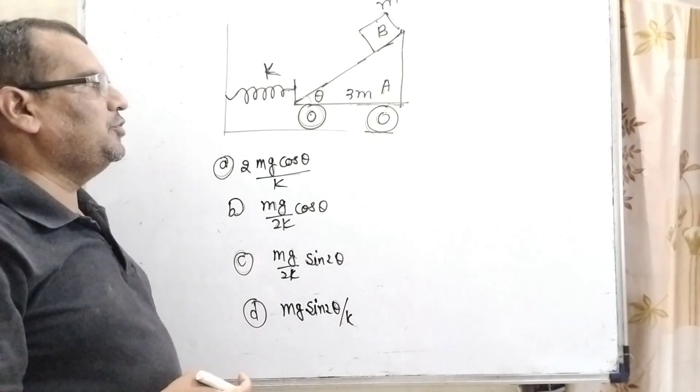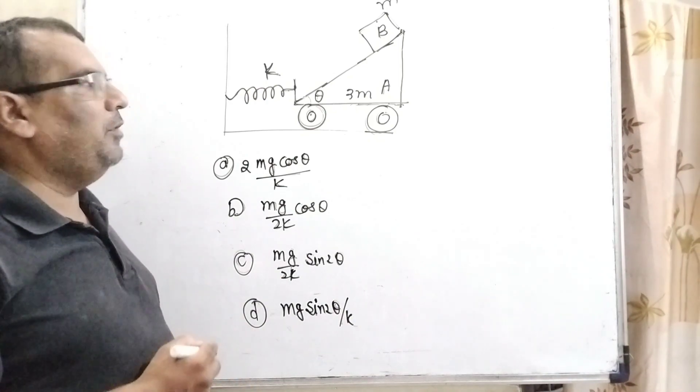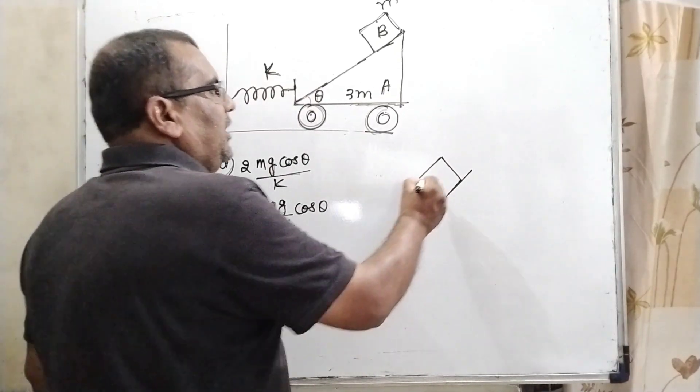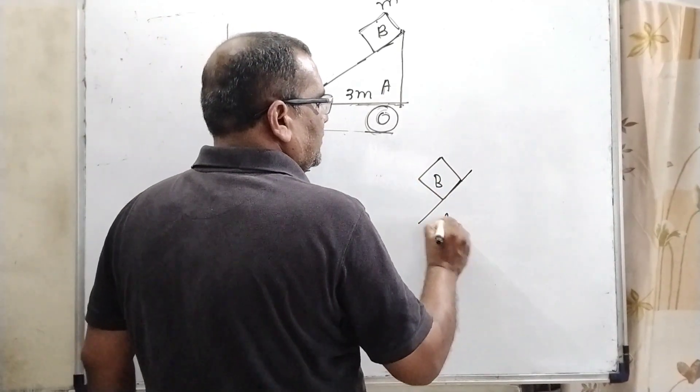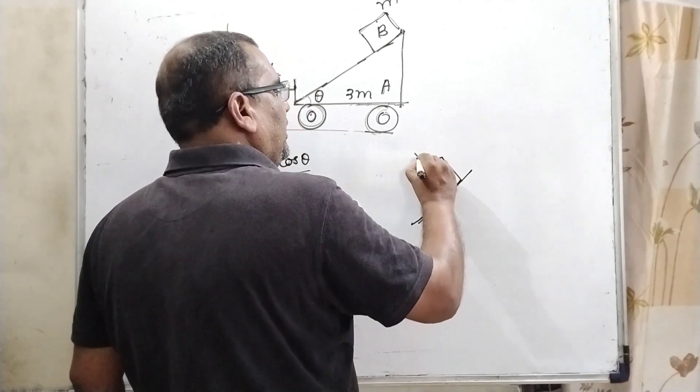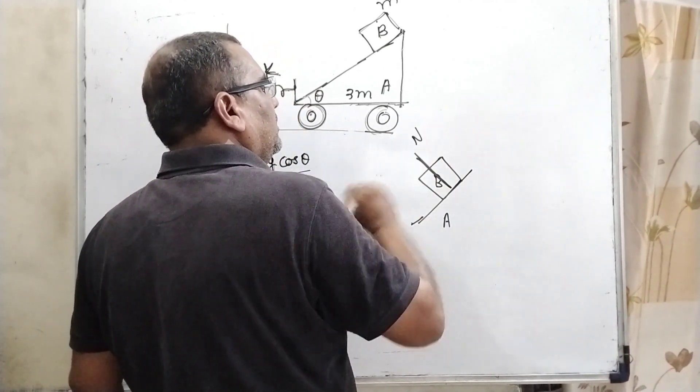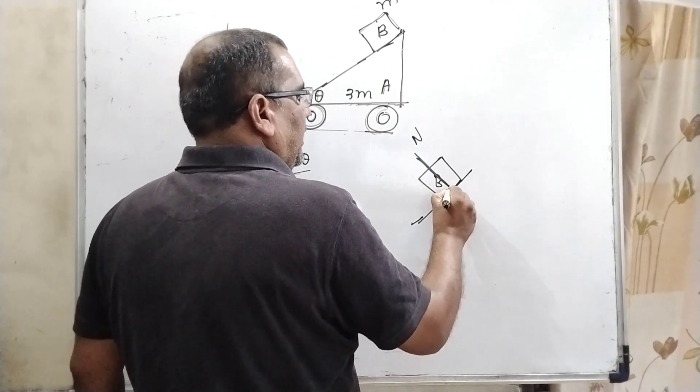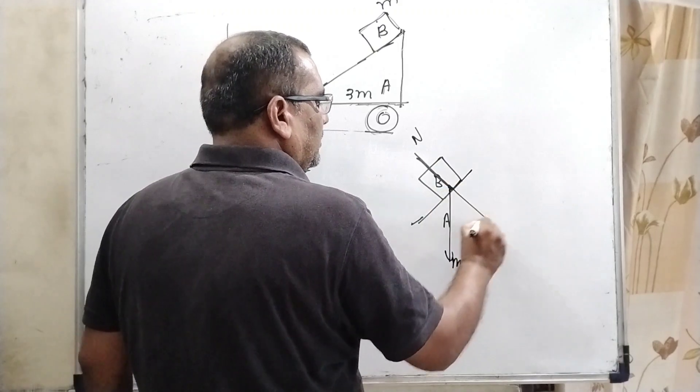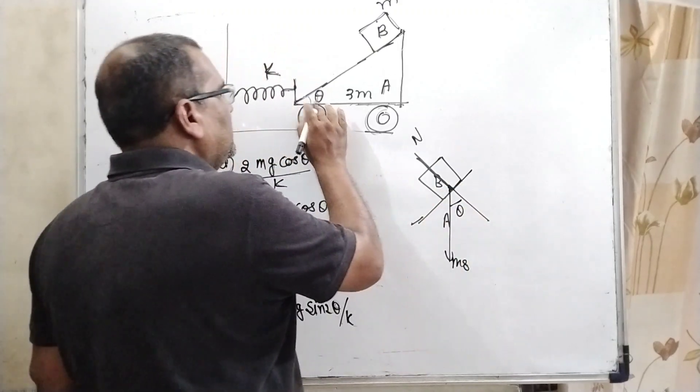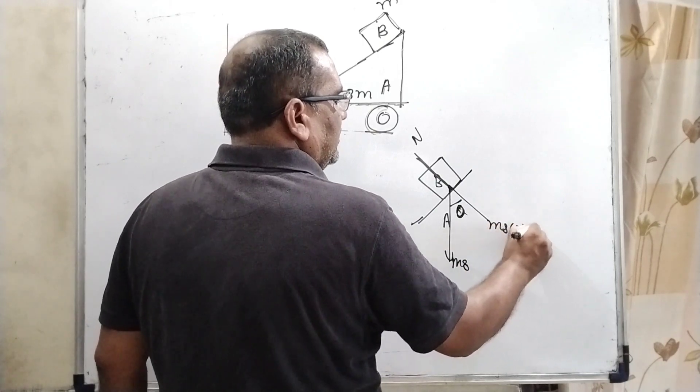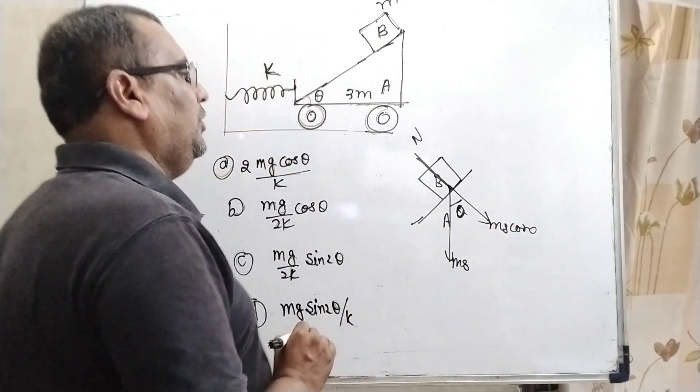So let us first draw the free body diagram for block B. Now this block B is kept over this wedge A. So therefore, initially its normal force is acting in the upward direction. And here Mg acts in the downward direction. So theta is given, so it becomes also theta. Then Mg cos theta in this direction.